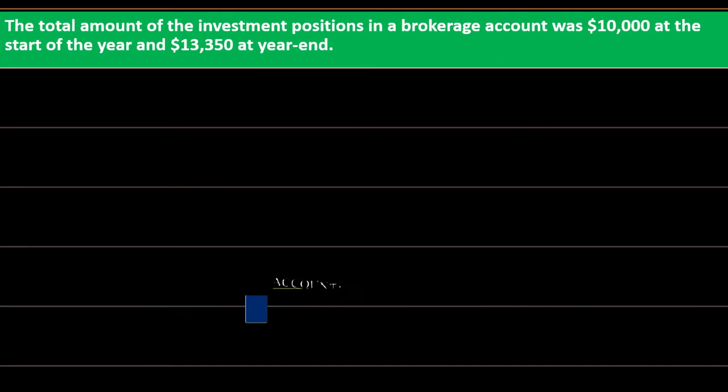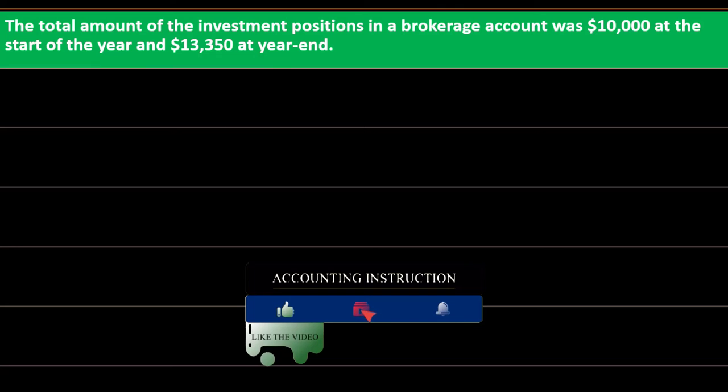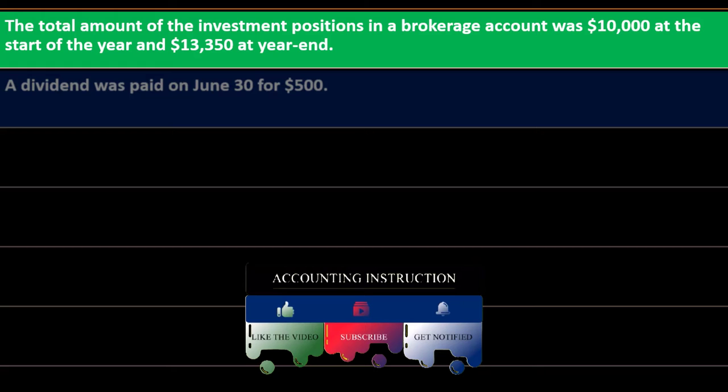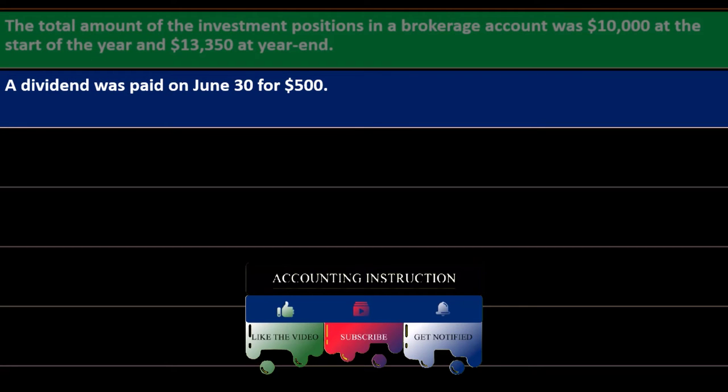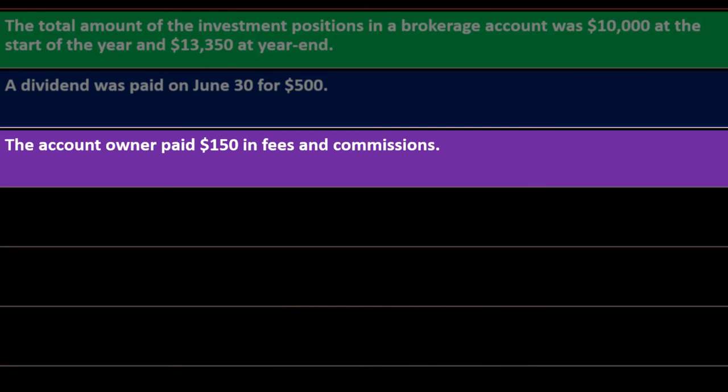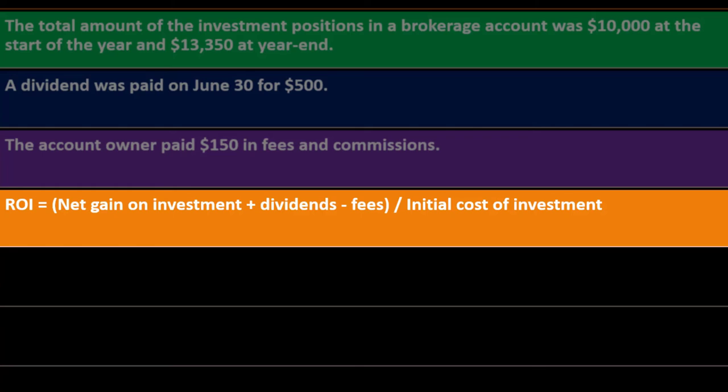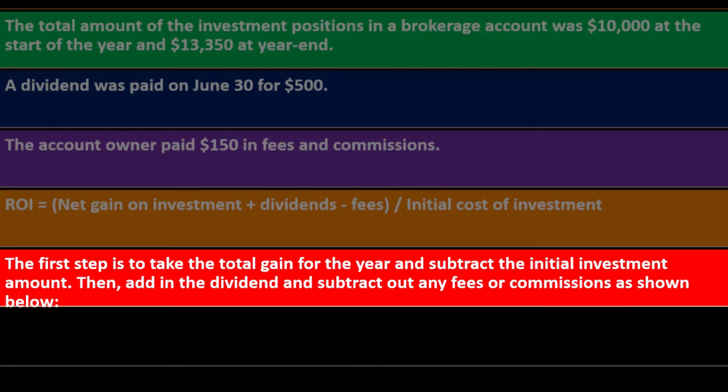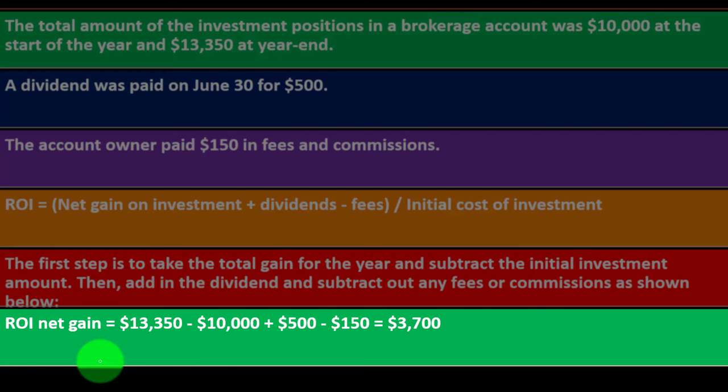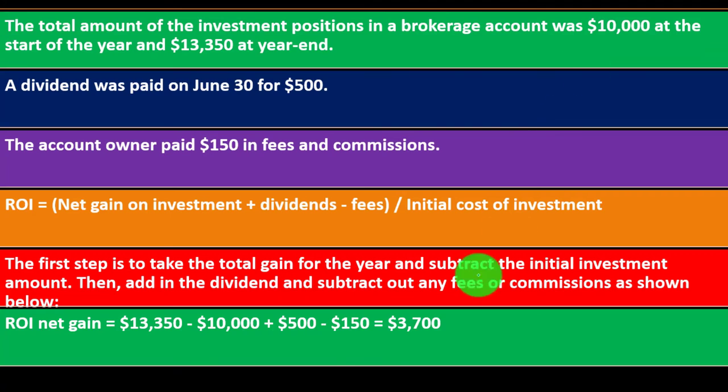Example of calculating portfolio returns: The total amount of investment positions in a brokerage account was $10,000 at the start of the year and $13,350 at year end. A dividend was paid on June 30 for $500. The account owner paid $150 in fees and commissions. The ROI would be the net gain on investment plus dividends minus the fees, divided by the initial cost of investment. The first step is to take the total gain for the year and subtract the initial investment amount. Then add in the dividend and subtract out the fees or commissions as shown.